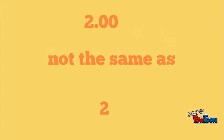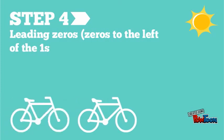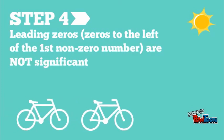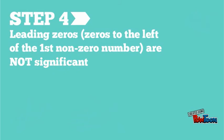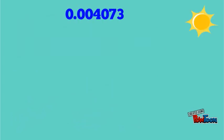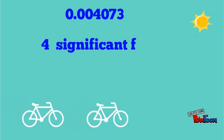The next rule is that leading zeros — zeros to the left of the first non-zero number — are not significant. They're only used to locate a decimal point. So in 0.78, the zero in front is not significant; we have two significant figures. In 0.004073, we get four significant figures.